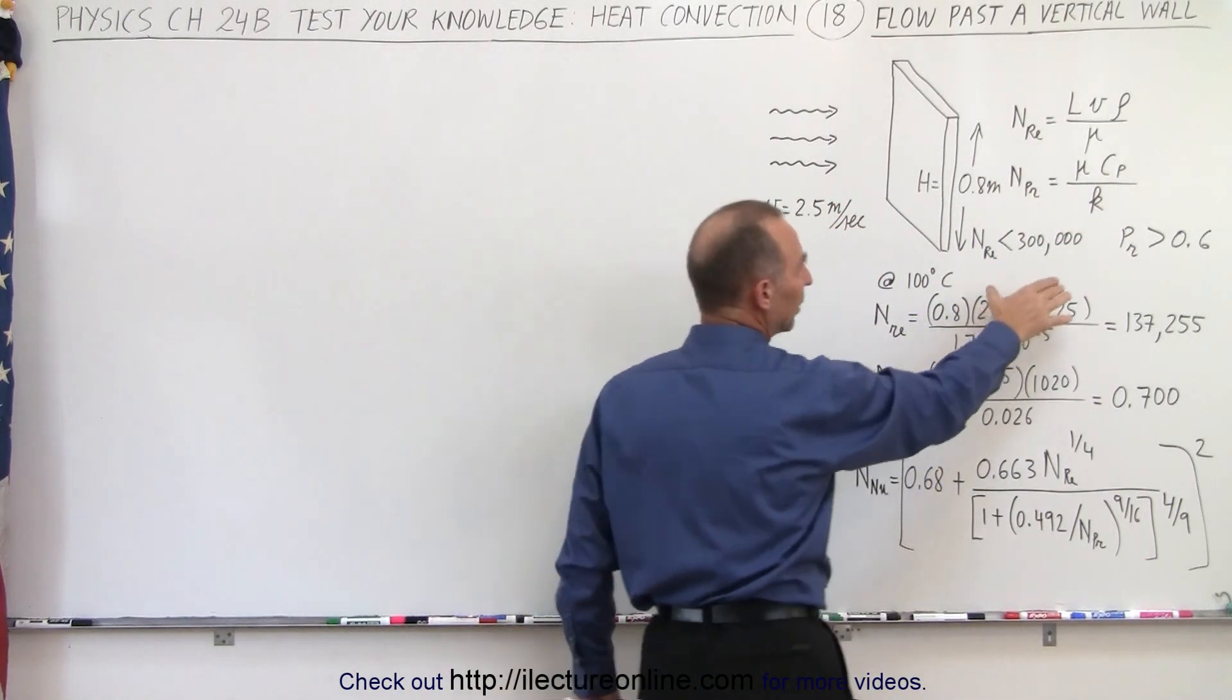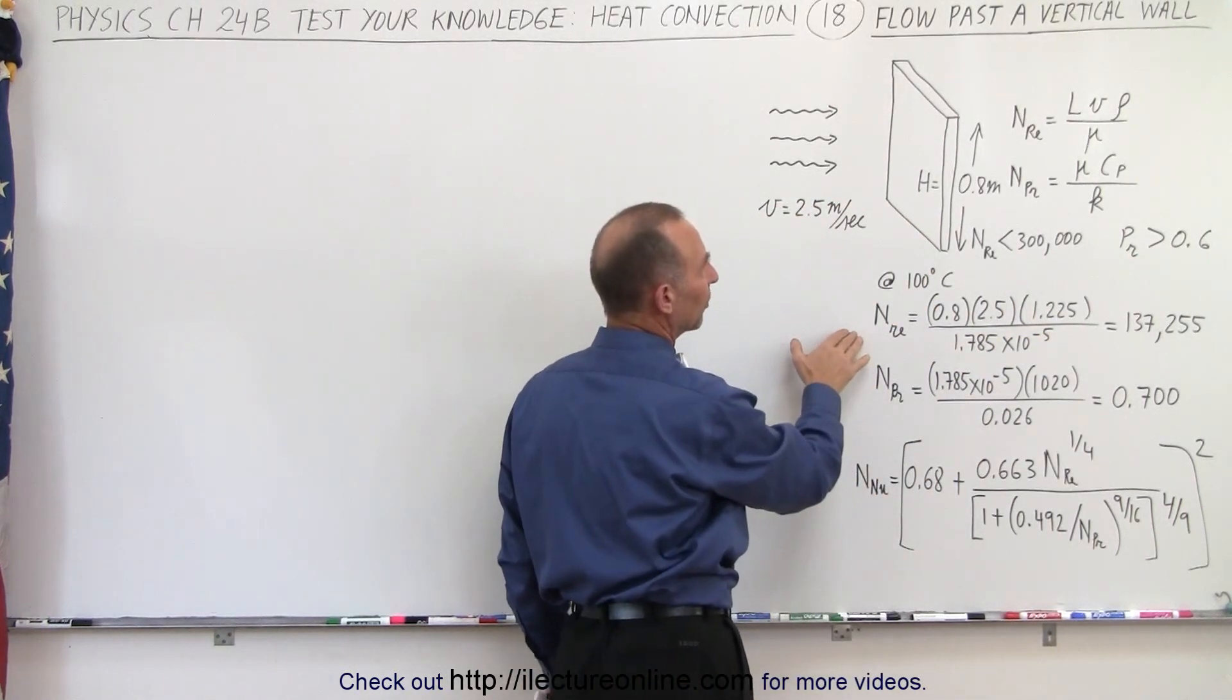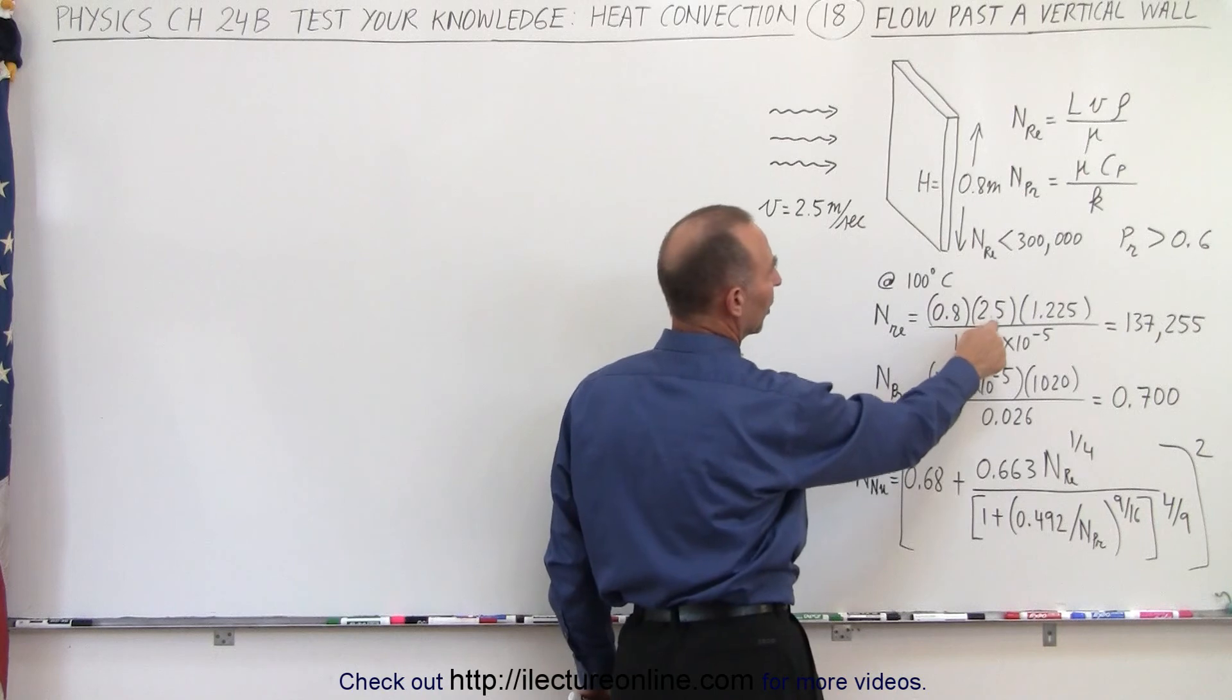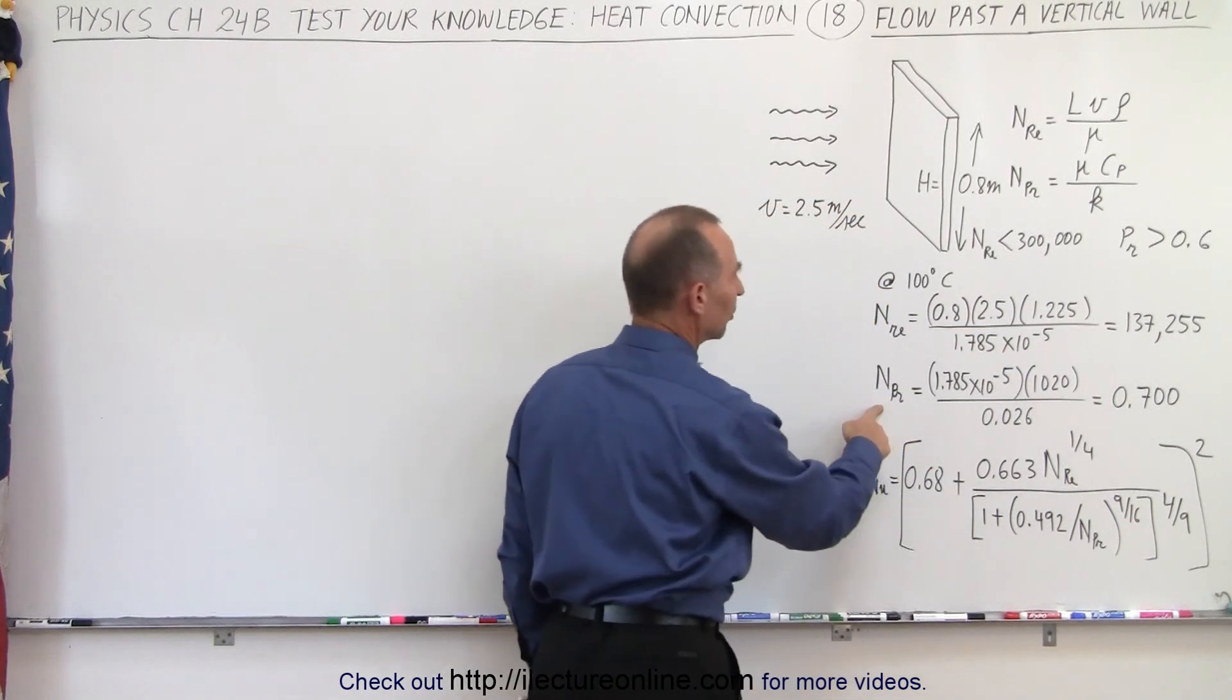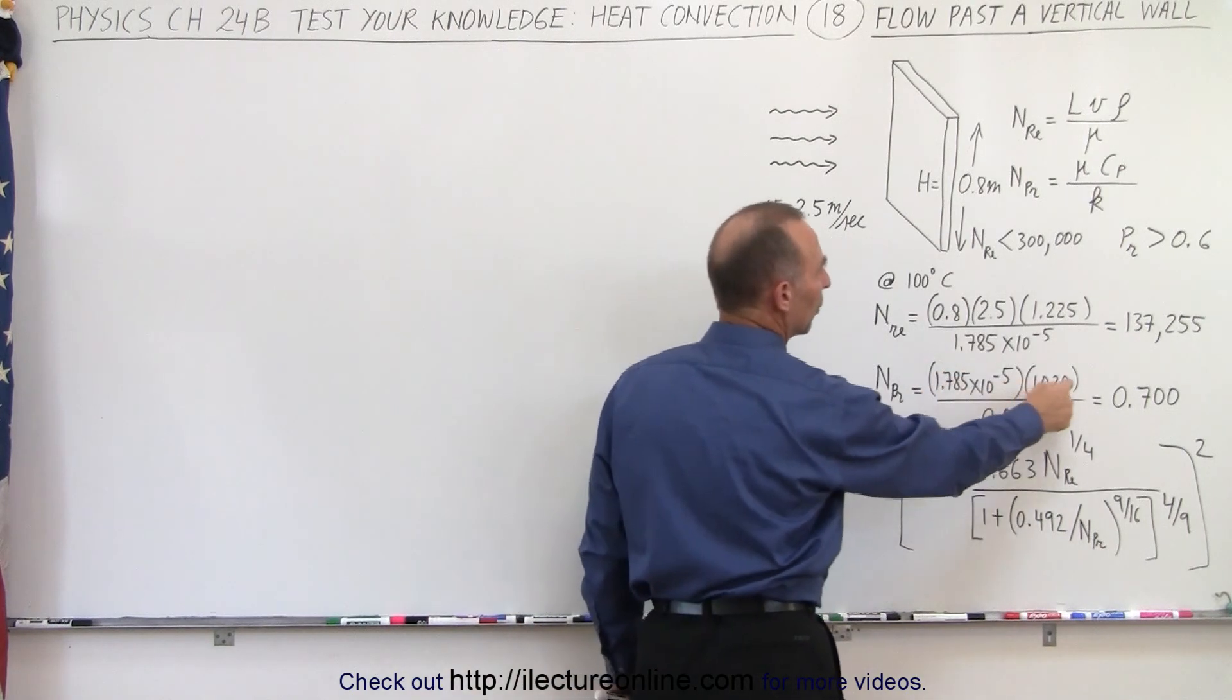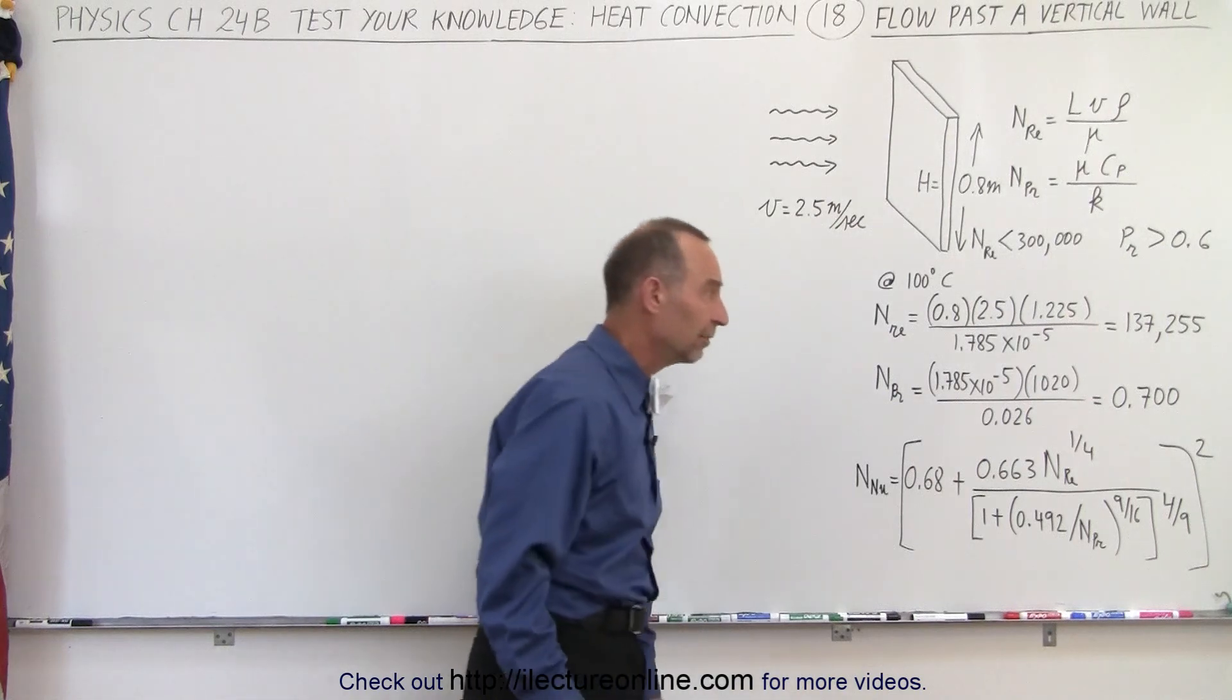We're looking for limitations on the Reynolds number and the Prandtl number. For the Reynolds number we have the characteristic length, the velocity, the density and the viscosity. For the Prandtl number we have the viscosity, the specific heat, and the heat conductivity constant.